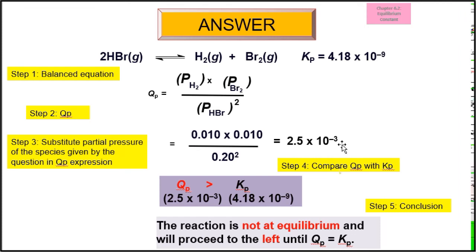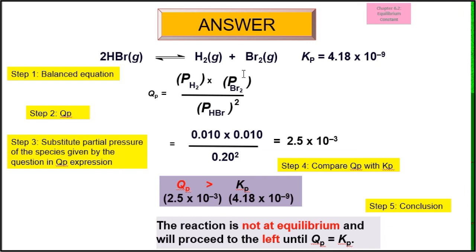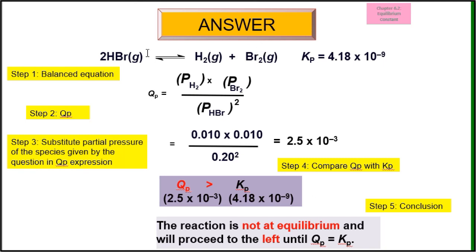The products are hydrogen and bromine, and the reactant is hydrogen bromide. In detail: the reaction is not at equilibrium, and the system tries to achieve equilibrium by shifting to the left. Since this involves Qp (not Qc), we talk about partial pressure — you need to increase the partial pressure of bromine and hydrogen, and decrease the partial pressure of hydrogen bromide, by shifting the system to the left until Qp equals Kp.